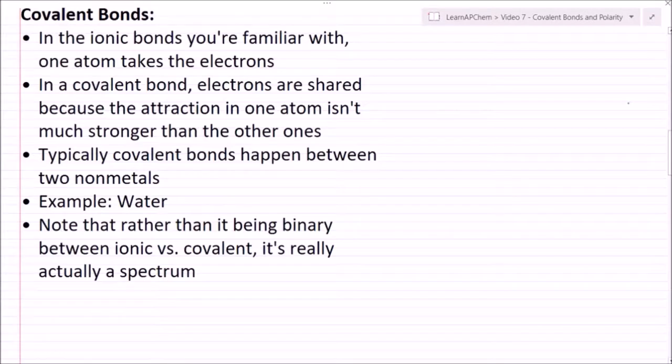So let's talk about covalent bonds. In ionic bonds that you're familiar with, one atom takes the electron. Let's look at NaCl, so we have sodium metal combining with chlorine to form NaCl. Here, chlorine is taking one of sodium's electrons.